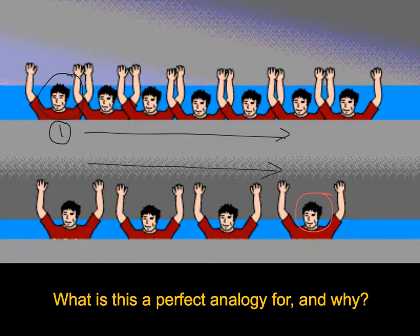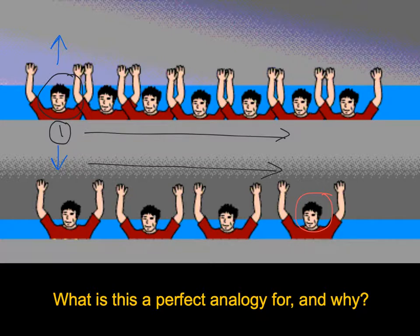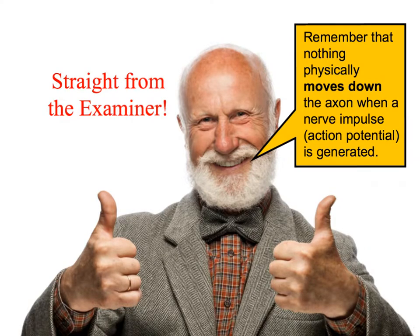This is an analogy for a nervous impulse - almost specifically an action potential - because that guy isn't actually physically moving down the line. Nothing is moving down a nerve axon as such. It's all about things moving in and out of the cell, just like things moving up and down in the Mexican wave analogy. This is a tip straight from the examiner: nothing physically moves down the axon when a nerve impulse or action potential is generated. It's actually all about the movement of ions in and out of the cell at specific points of time.